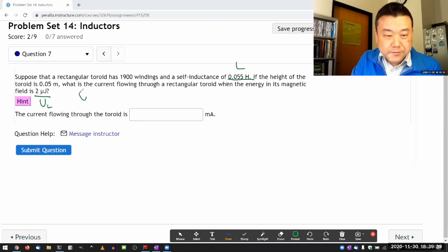So I use this expression for the energy stored in an inductor, one half L I squared. Since it's asking for the current, solve this for I. The current is two times the energy stored in inductor, divided by inductance, square rooted.